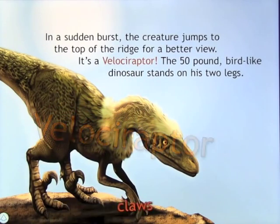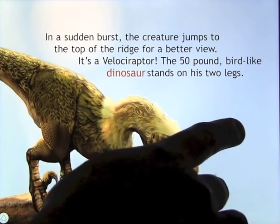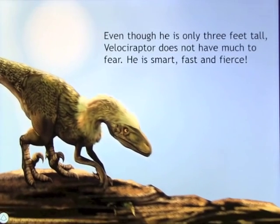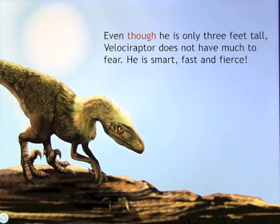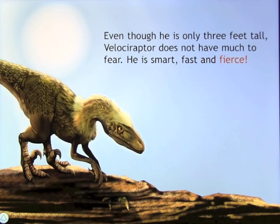Touching words in the text highlights them — for example: 'Velociraptor,' 'Claws,' 'Dinosaur.' The book reads: 'Even though he is only three feet tall, Velociraptor does not have much to fear. He is smart, fast, and fierce.'